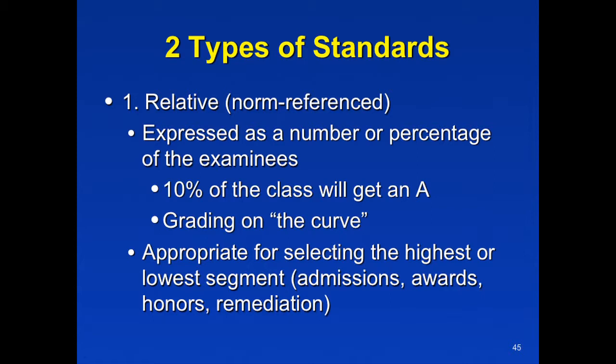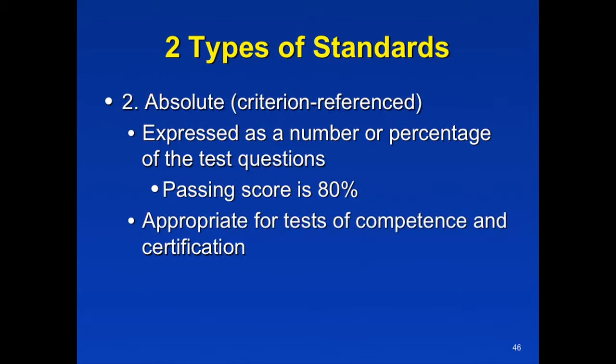These standards are designed to get a specific number of people in a specific category. What's probably more common is to have absolute standards, where we want to define a score — a quantification on our assessment that people have to reach in order to achieve, or for us to make a decision. Eighty percent has the pass-fail mark. These are most often used for assessments in which you're trying to identify competence or make certification judgments.